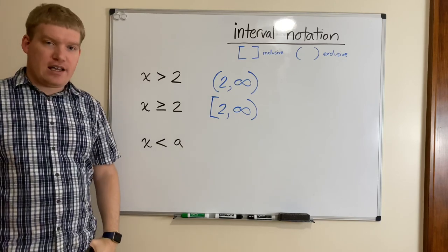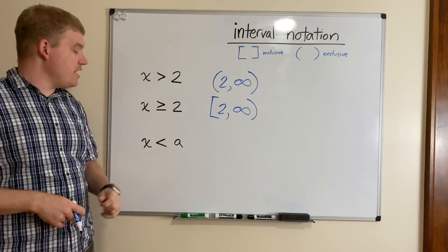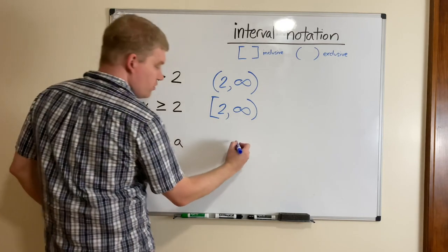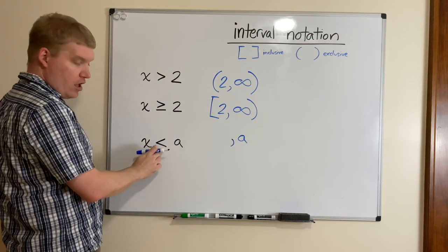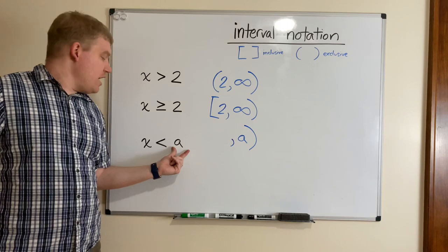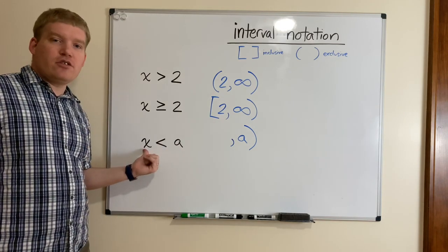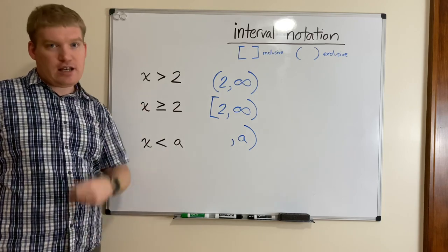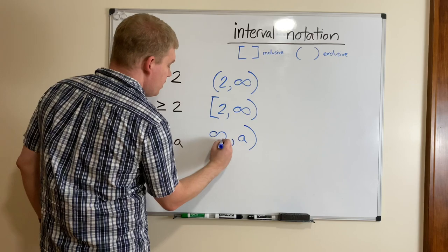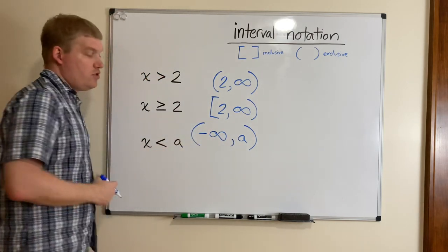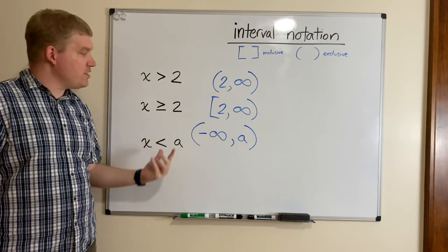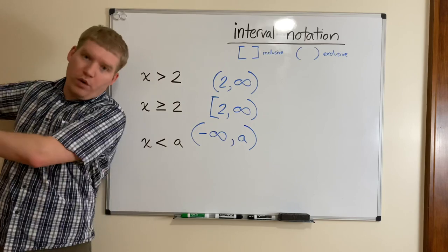For x less than a: x goes to the left, so a is the upper bound. No equality means a parenthesis at a. Let's say a is 0 — x values would be negative 2, negative 70, negative 3 million, continuing forever. On the left side we write negative infinity. Negative infinity is still exclusive — it's not a specific number — but it represents going the other way forever. So the interval is written from negative infinity to a, with parentheses on both ends.